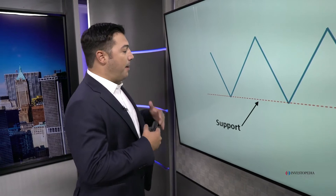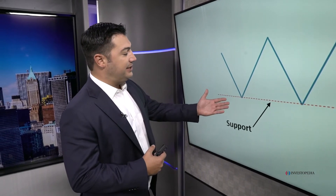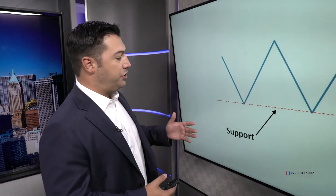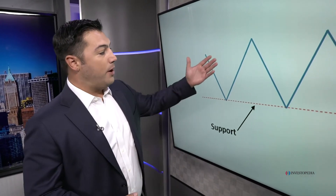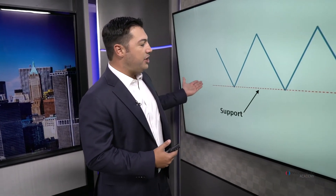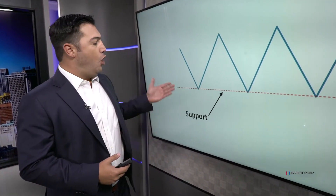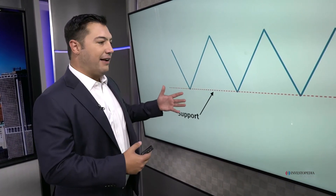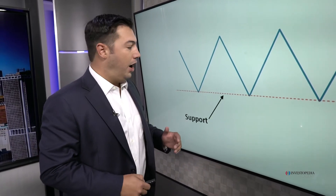There comes a point where the amount of selling taking place in a downtrend gets overwhelmed by the buyers — that's support, where the price falling ends and a phase of appreciation begins. When markets return to that former level of support and it holds again, that is further evidence of its importance. The more times a level is tested, the more significant it becomes in the future.